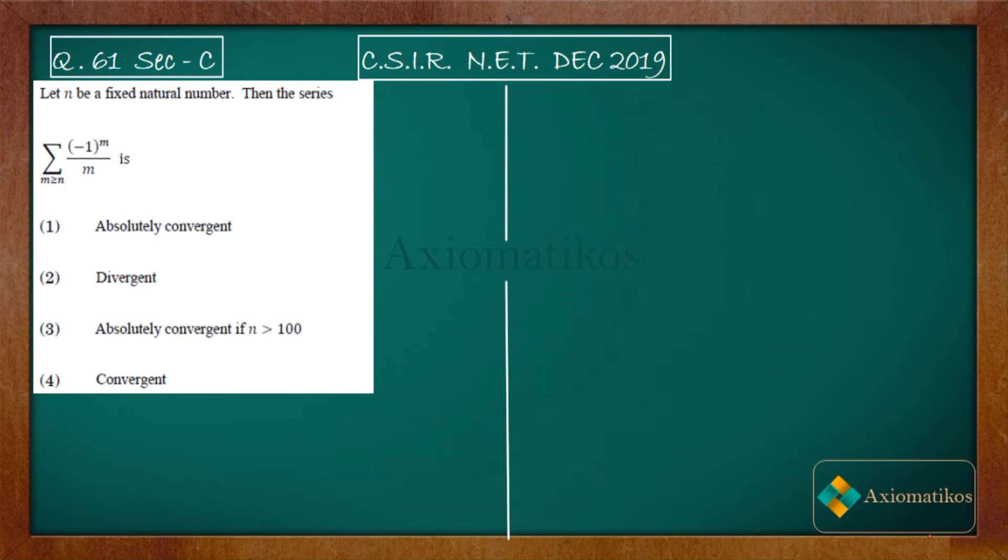It's a problem of analysis, so let us have a look. Let n be a fixed natural number, then the series—we have a series like this and the question is asking about the absolute convergence of this series.